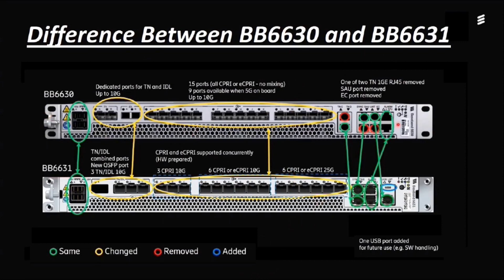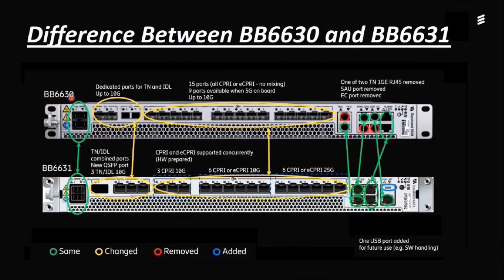We will go through both basebands left to right and know the differences between the 2630 and 2631. Starting with BB 2630 — we can see the model number BB 2630 here. It has power ports where you can give two supplies: A on top and B on the bottom. Primary and secondary power can be given to this baseband from a rectifier, PDU, or DCDB box, but you must supply only DC, which is minus 48 volts.